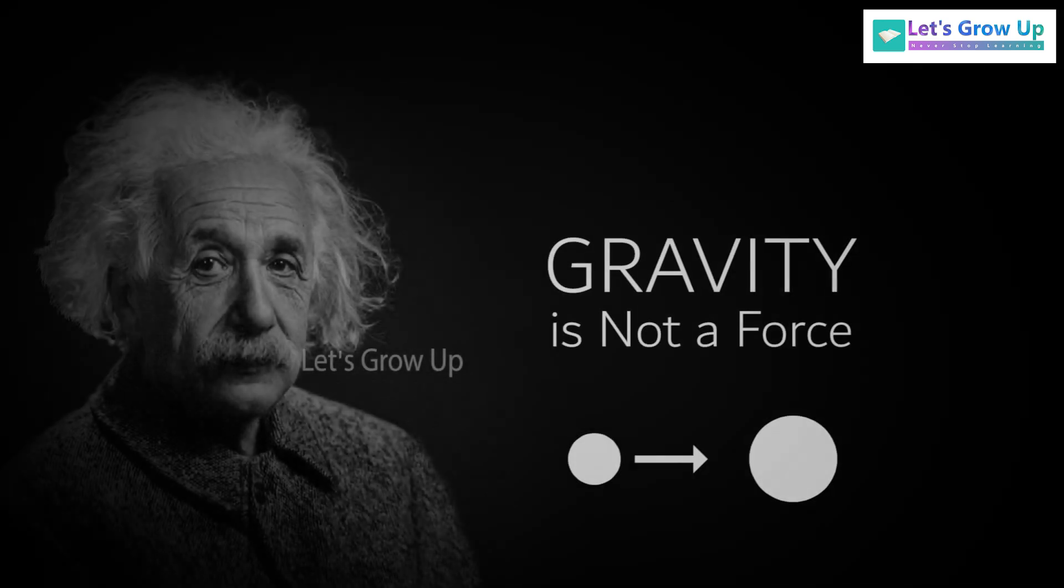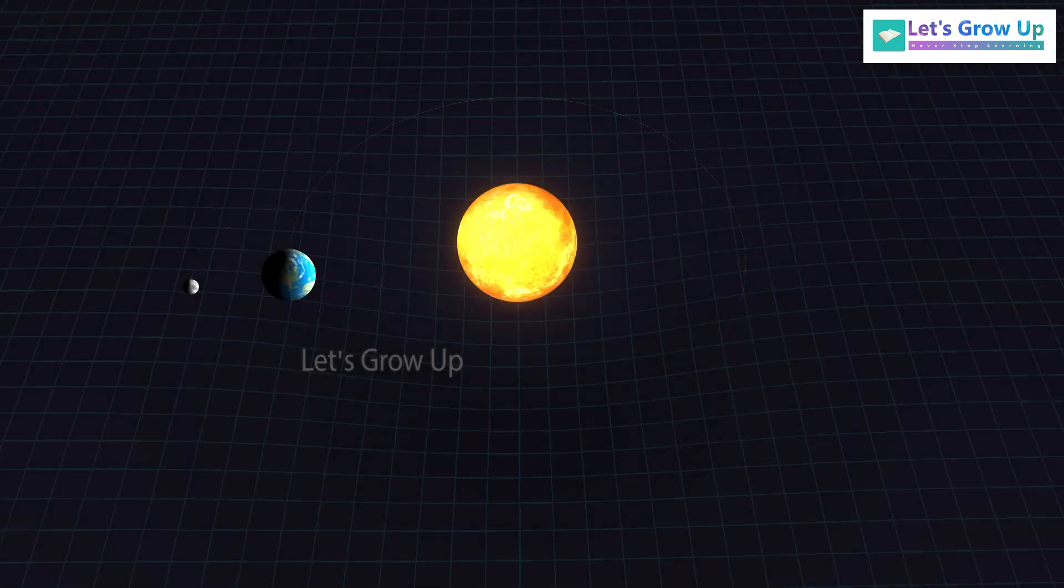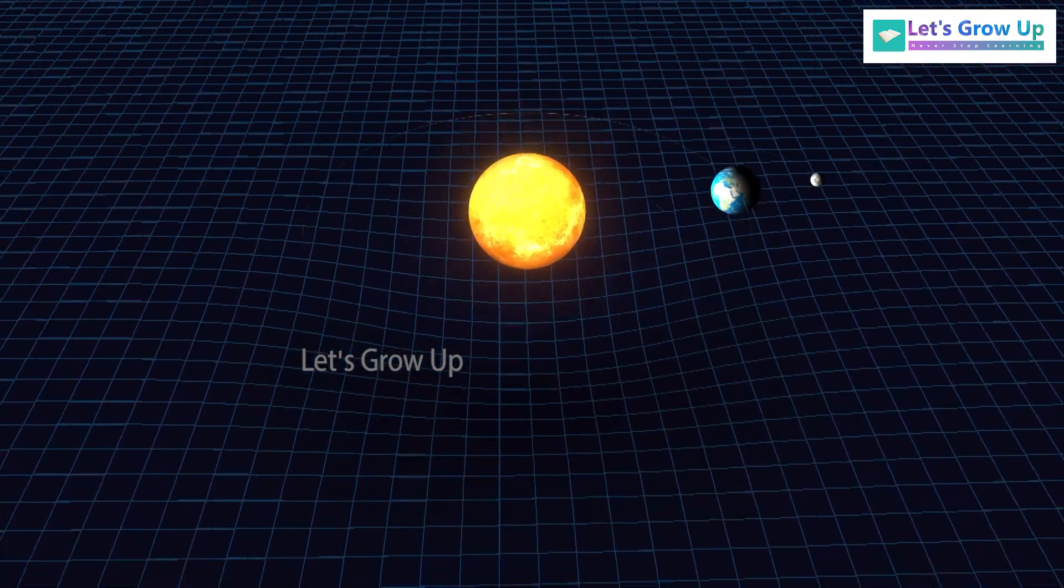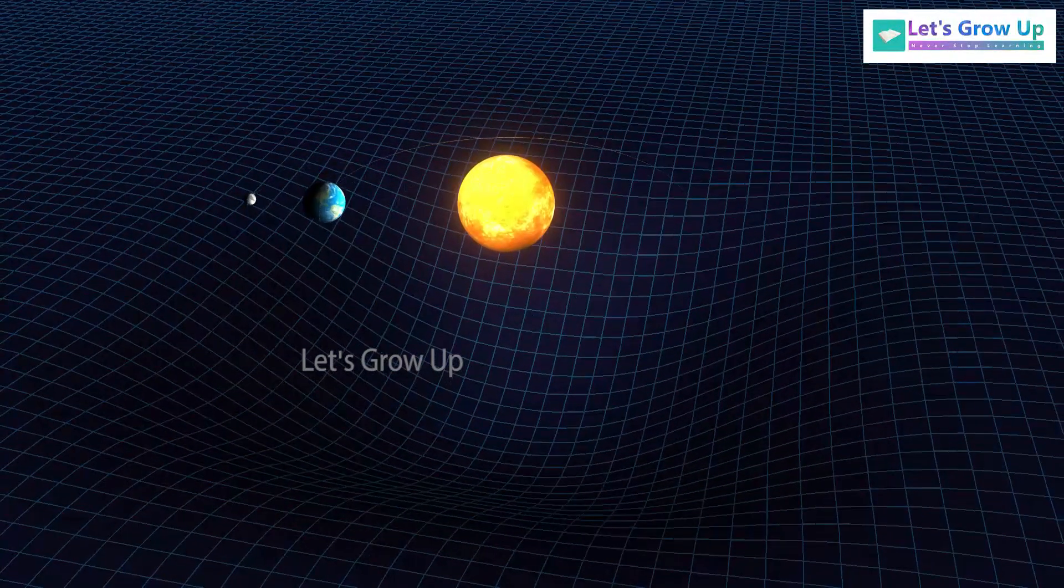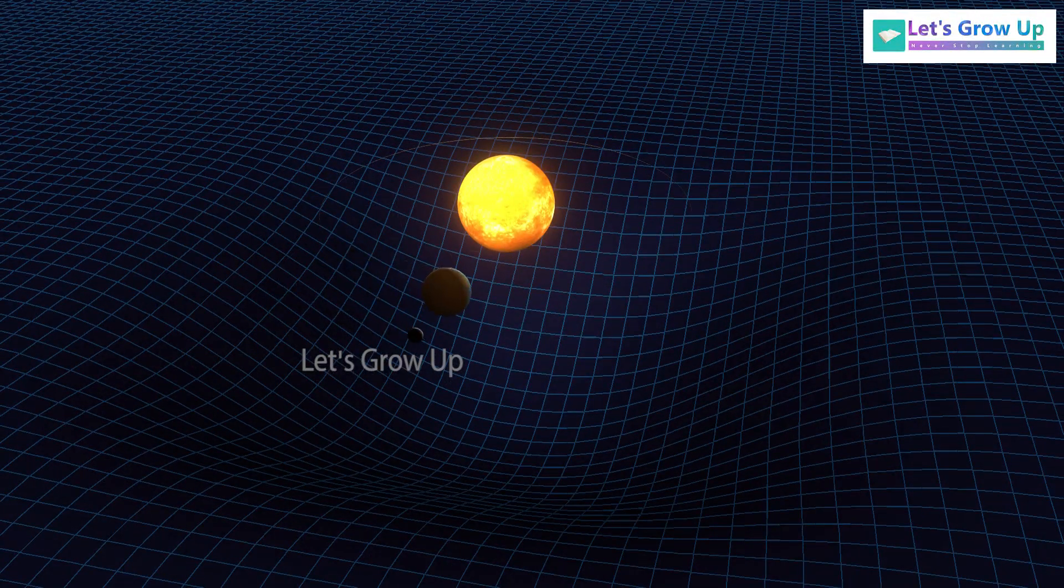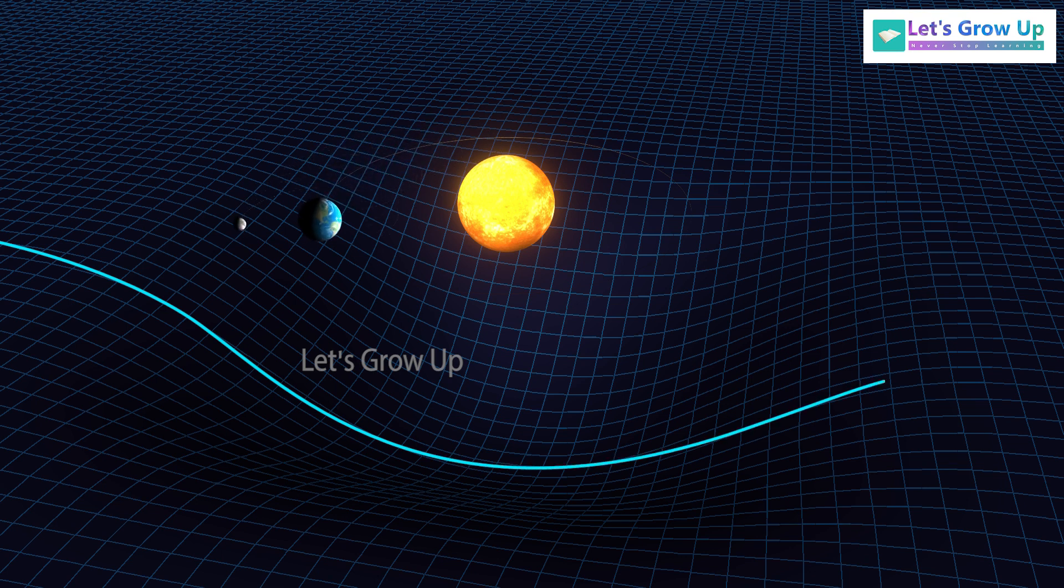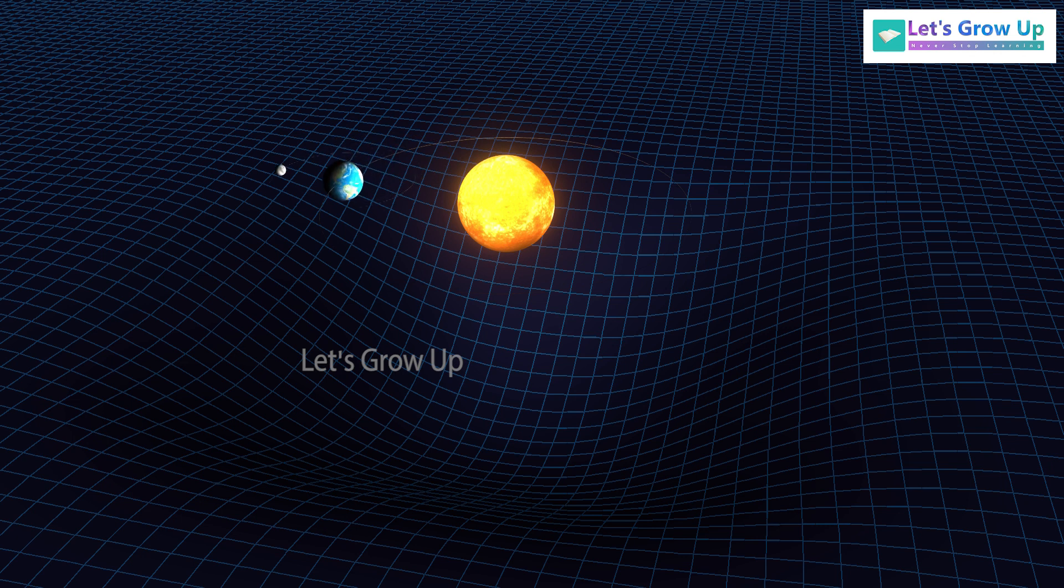Einstein concluded that gravity is not a force of attraction. Think: the moon revolves around the Earth and the Earth revolves around the sun because of gravity, not force. The basic idea is that instead of being an invisible force that attracts objects to one another, gravity is a curving or warping of space. The more massive an object, the more it warps the space around it. In Einstein's view of the world, gravity is the curvature of space-time.